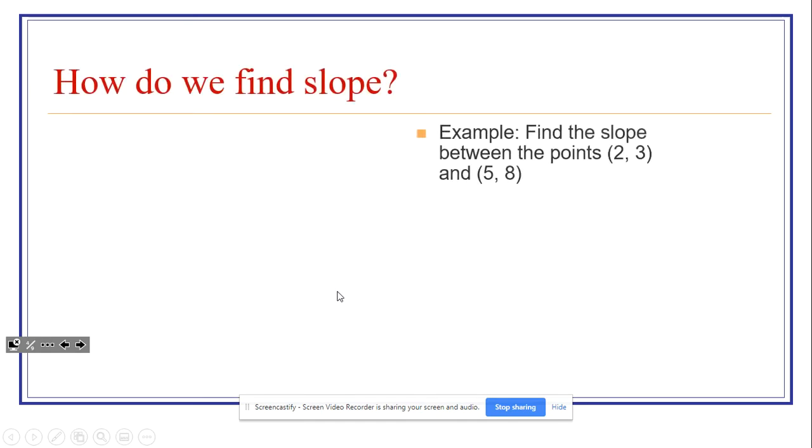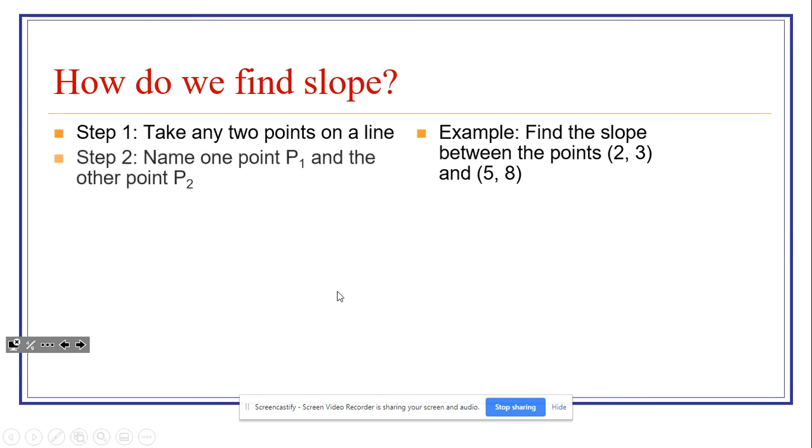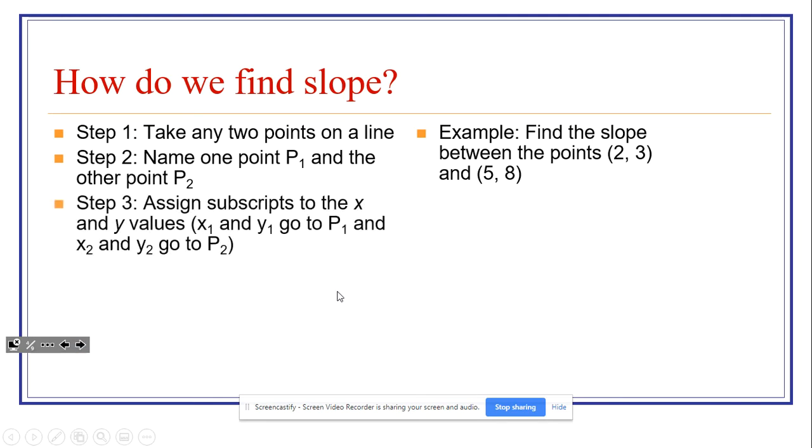So how do we find slope? An example to the right, and I'll put the steps on the left. The first thing we want to do is take any two points on a line. And in this case, in our example, we have the two points. The next thing that we'll do is we'll name one of the points P1, and we'll make the other one P2. So P1 in this case is going to be 2, 3, and P2 in this case is going to be 5, 8.